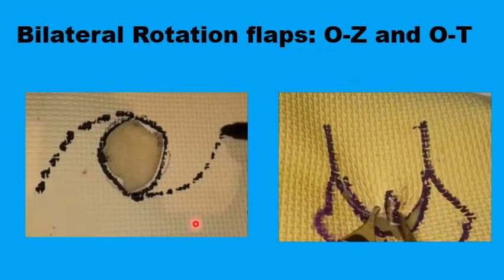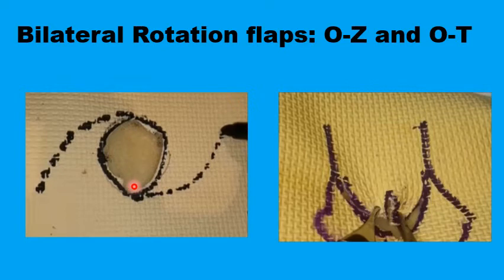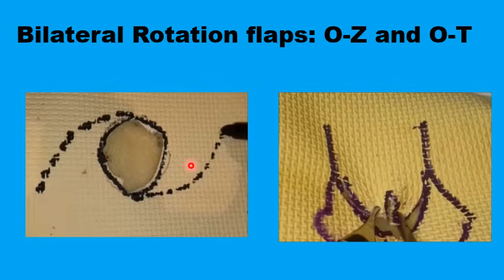Bilateral rotation flaps can be used to reconstruct a large lesion — for example, in the scalp — or when tissue is limited to one side and you want to recruit from both sides, or when the lesion is in the midline and you want to maintain symmetry. A circular defect can be transformed into a Z reconstruction by having two rotation flaps going in opposite directions on either side of the defect. Once sutured, you see a Z rather than an O.